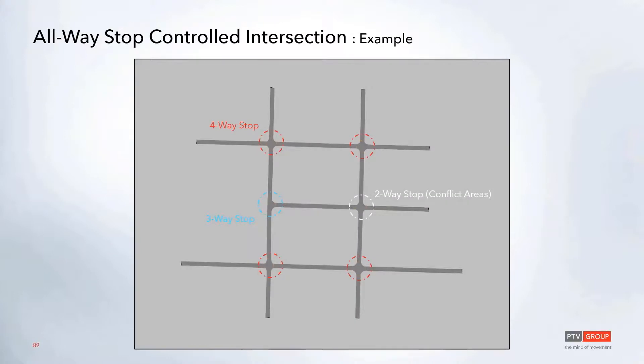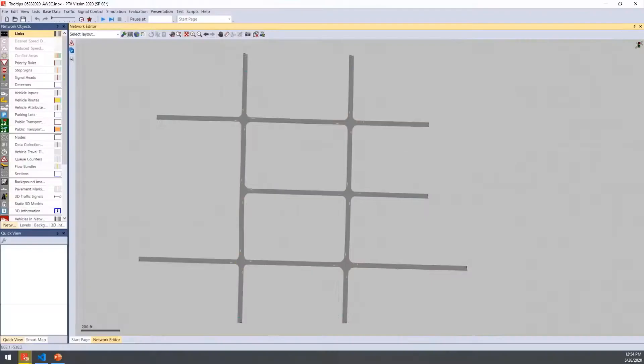So let's go ahead and take a look at this example that we have here. This has four different four-way stops as well as a three-way stop that's also going to use the same logic. And then this also includes a two-way stop that is just controlled with conflict areas. So I'll pull up that example file here.